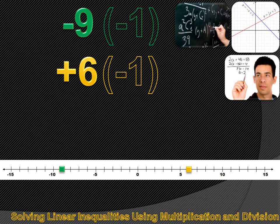Sure enough, if we multiply minus 9 by minus 1, it becomes positive 9. And if we multiply positive 6 by negative 1, it becomes negative 6. That negative number drives the original number to the other side of the origin. So you can see that the inequality sign is going to have to reverse.